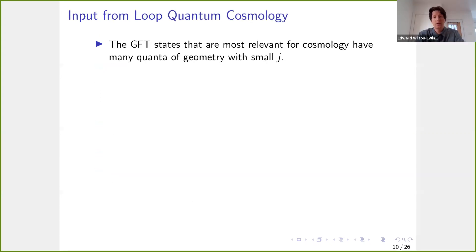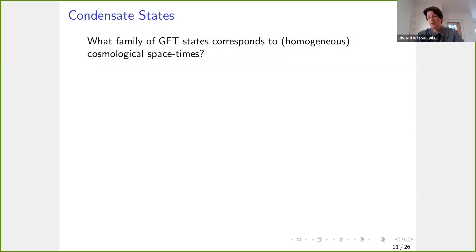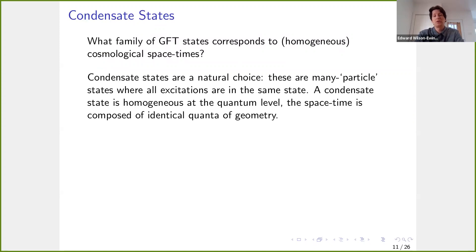We have some input from quantum cosmology, and the question is how to choose our GFT states. What GFT state corresponds to a cosmological spacetime? A very natural choice is condensate states — many-particle states. We want a state highly excited with respect to the Fock vacuum, and condensate states have many, many quanta of geometry. For condensate states, all of these quanta are in exactly the same state, so in this sense the condensate state is homogeneous at the quantum level — a very strong version of homogeneity. This makes it a very natural state to try to extract cosmology from.